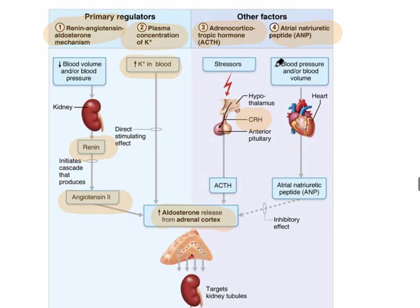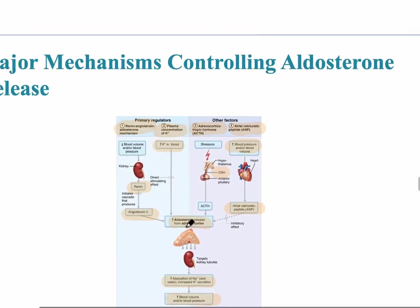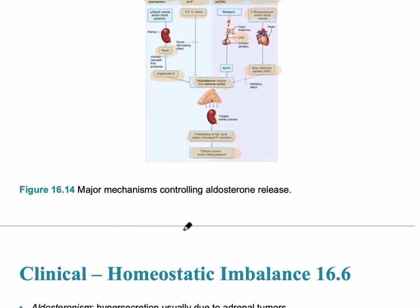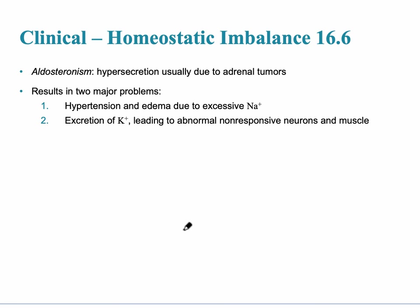If there is high blood pressure going into the heart, the heart can increase the release of atrial natriuretic peptide, which inhibits the effect of aldosterone as shown on this image. The clinical imbalance related to these mechanisms is aldosteronism — hypersecretion due to adrenal tumors. This results in more sodium in the blood, higher blood pressure leading to hypertension, and over-excretion of potassium.